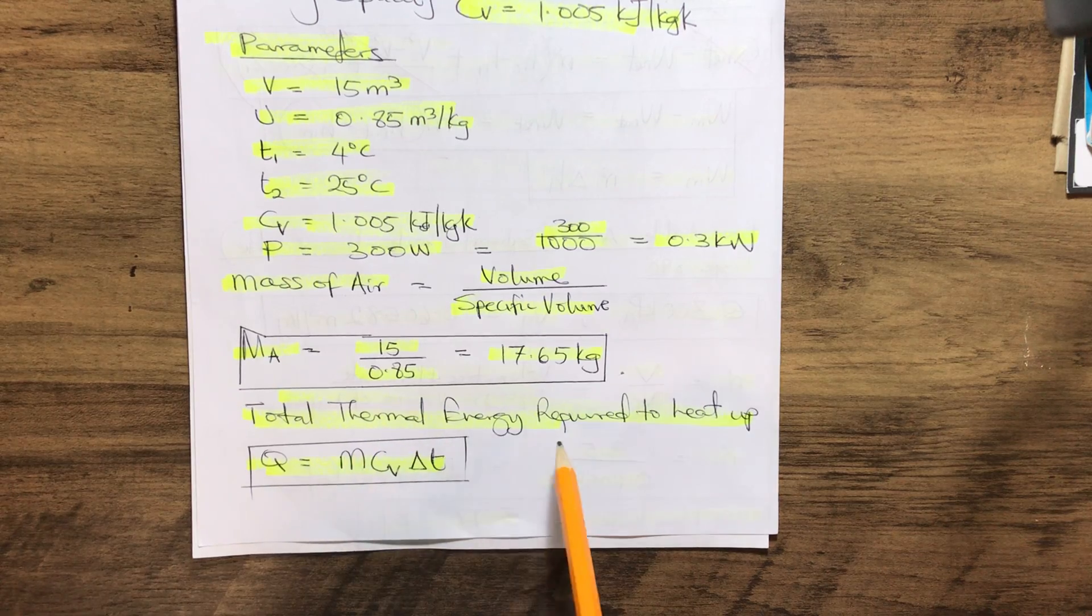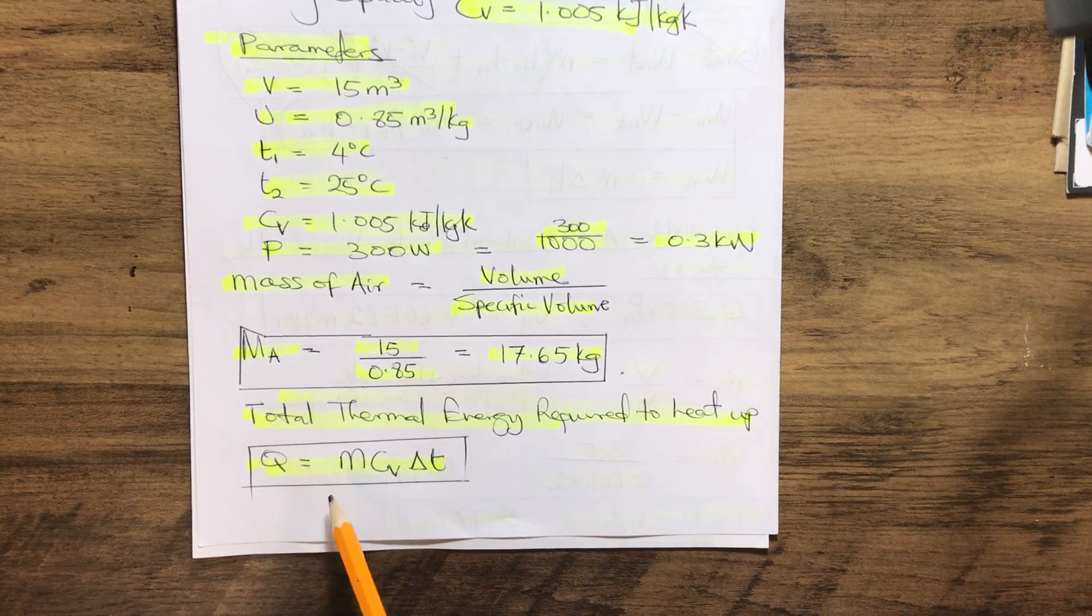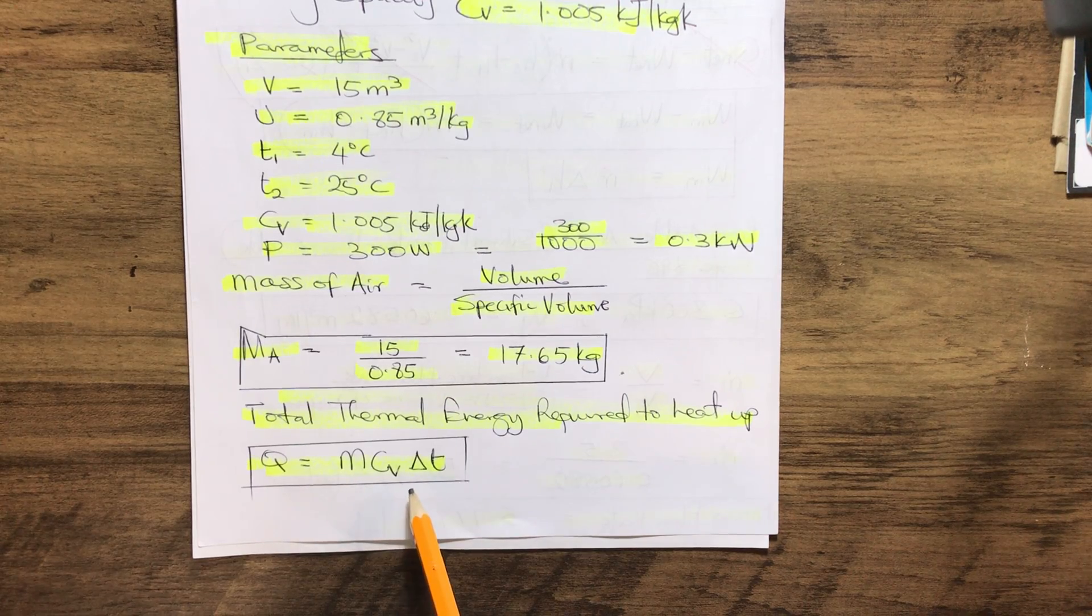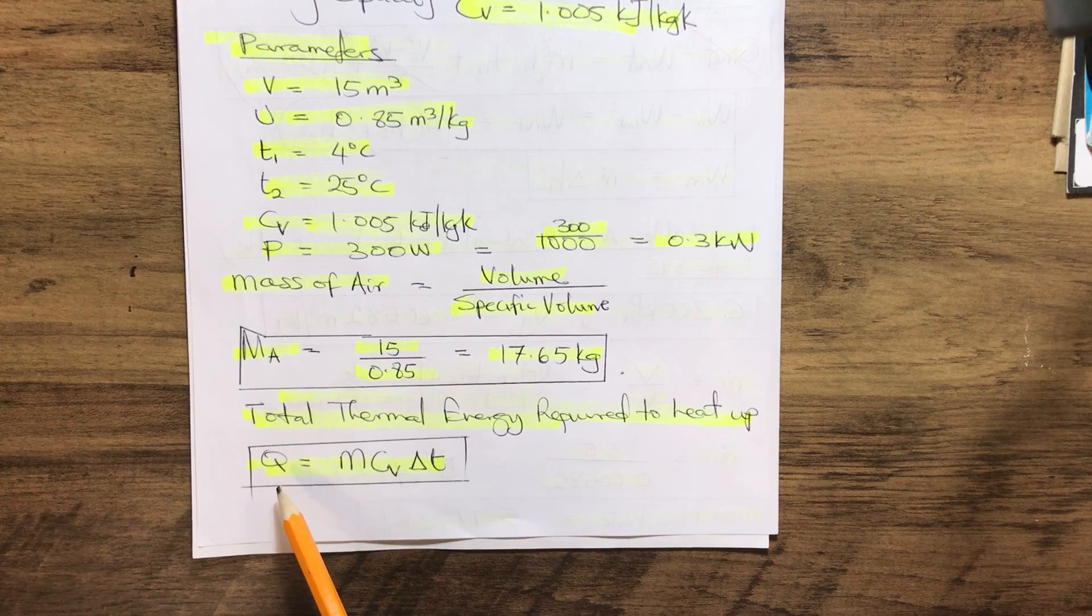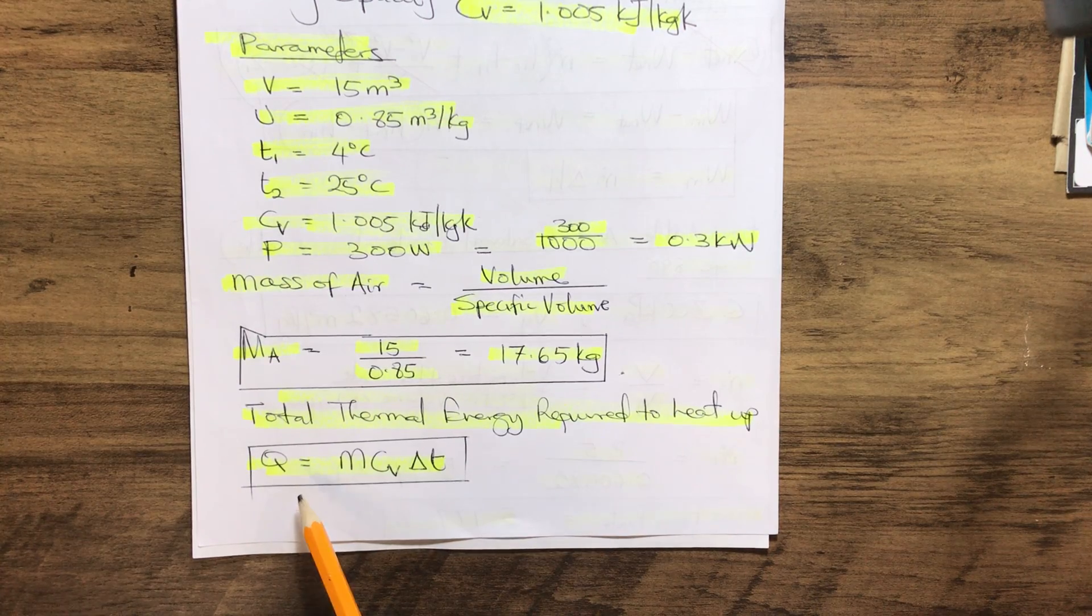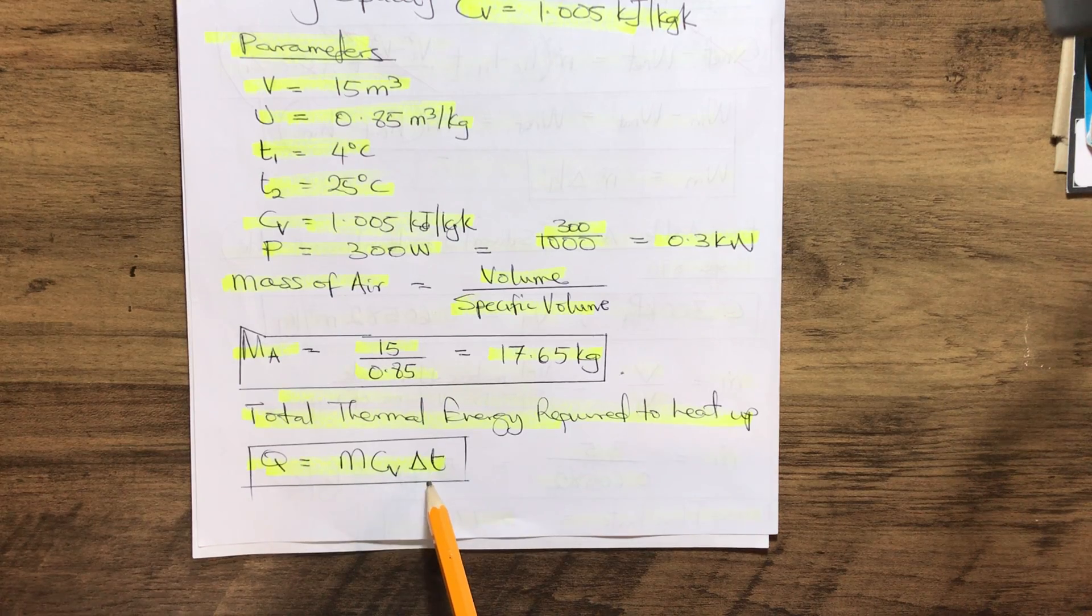Now the total thermal energy required to heat up the room: Q = mcvΔT. That is, Q (thermal energy) equals the product of mass times Cv times the temperature variation.